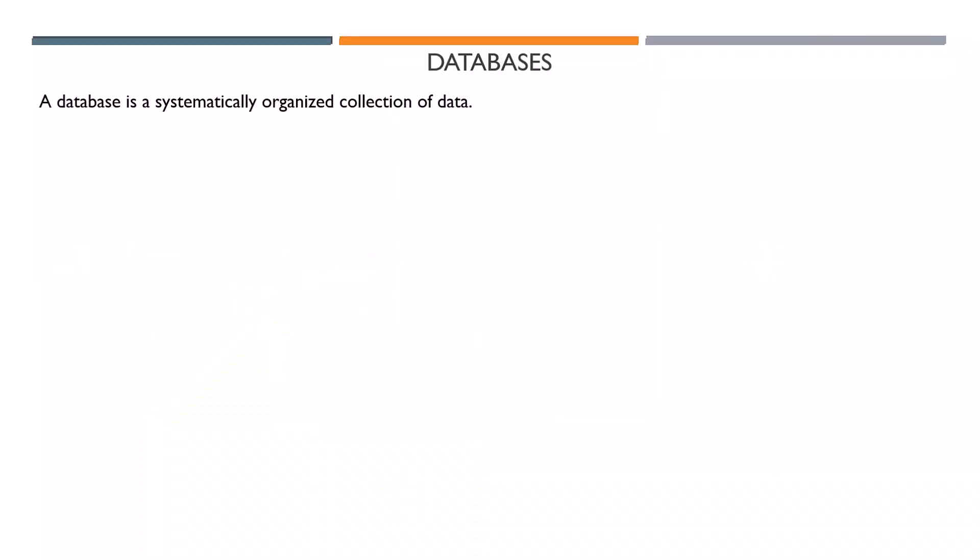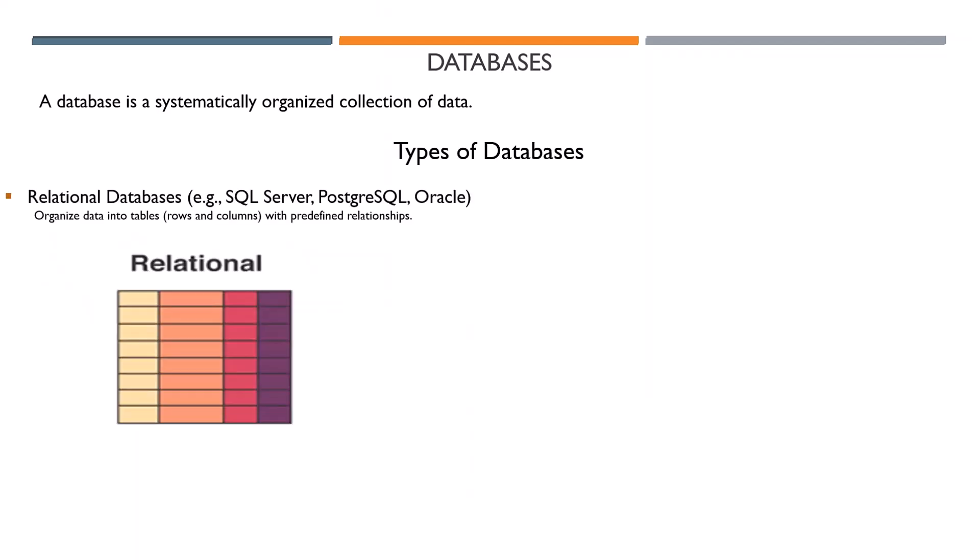We have different types of databases. Relational databases organize data into rows and columns with predefined relationships — basically tables. Examples include PostgreSQL, Oracle, SQL Server, and MySQL.